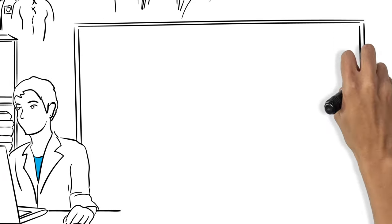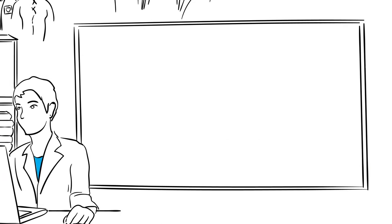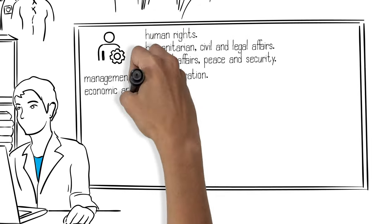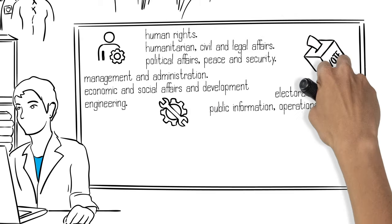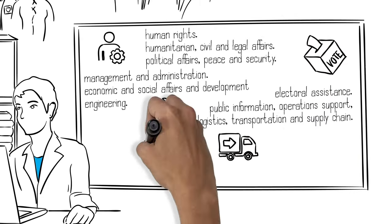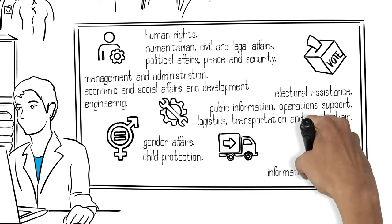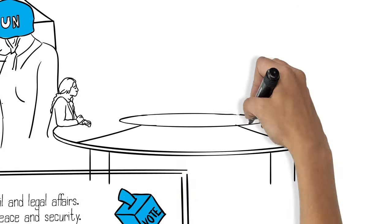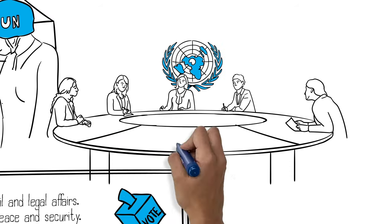Civilian personnel work in many different areas, ranging from human rights to political affairs, administration to engineering, electoral assistance to logistics and aviation, and gender affairs, and many more. They protect, they support, and they help build a sustainable peace.